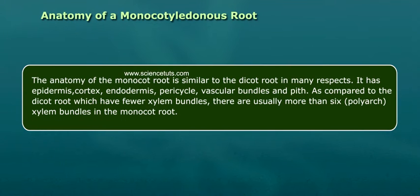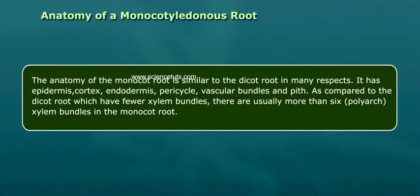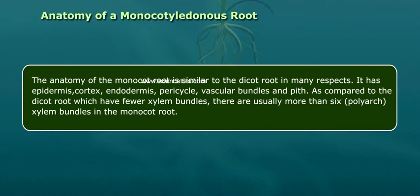The anatomy of monocot root is similar to the dicot root in many respects. It has epidermis, cortex, endodermis, pericycle, vascular bundles, and pith. As compared to the dicot root, which have fewer xylem bundles, there are usually more than six polyarch xylem bundles in the monocot root.